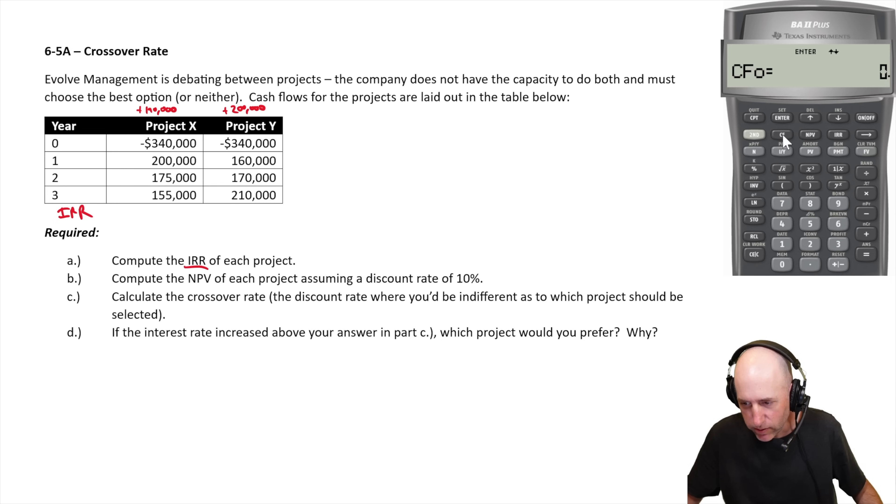So I clear, I go CF, second function, clear work, make sure there's nothing in there. CF, so CF at time zero, I'm doing project X now, $340,000, negative, enter. Down arrow, cash flow at time one, $200,000, positive, enter. Frequency of that is one, I only have one $200,000 cash flow. Everything here, the frequency is going to be one. $175,000 for cash flow at time two.